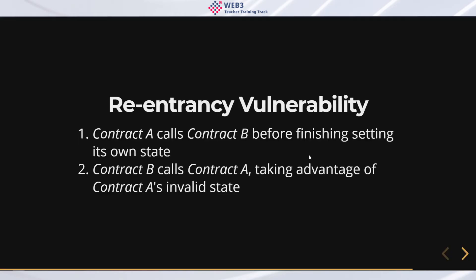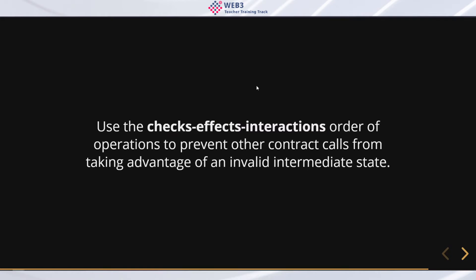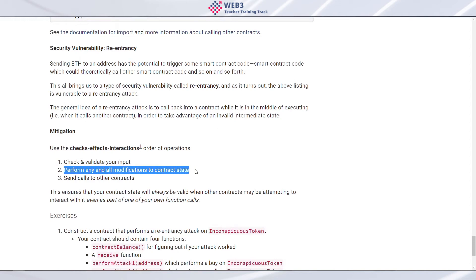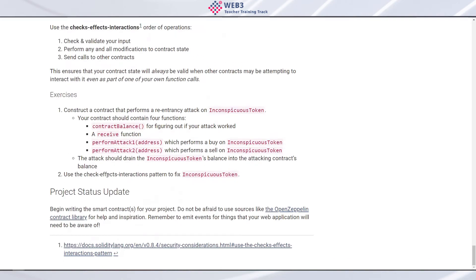Now let's talk about mitigation. The easiest way to prevent re-entrancy attacks is to use the checks-effects-interactions order of operations. First, check and validate your input; then perform all modifications to contract state; then send calls to other contracts. If you're not doing one of those steps you skip it, but always follow this order.